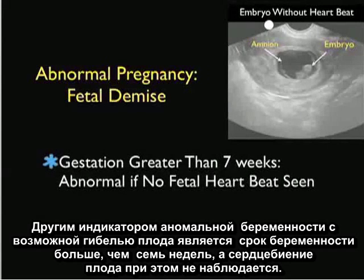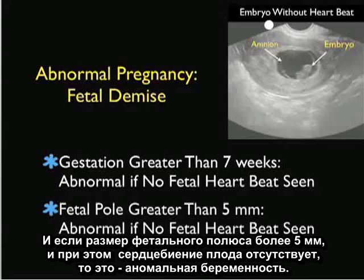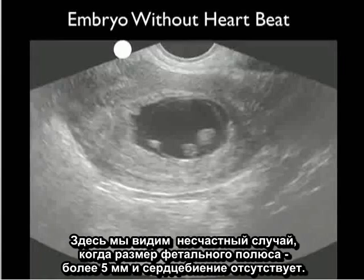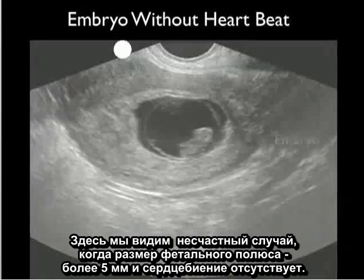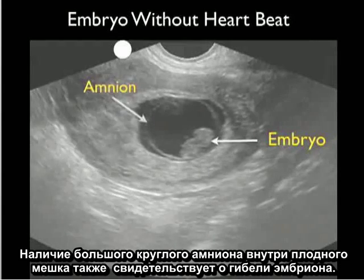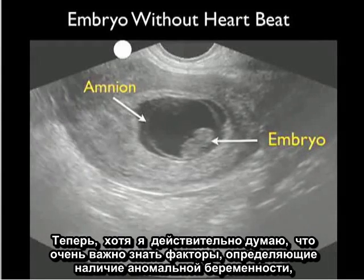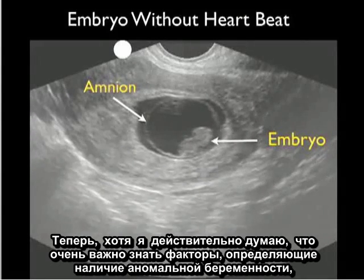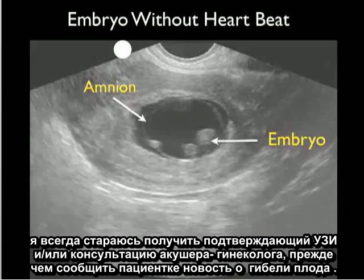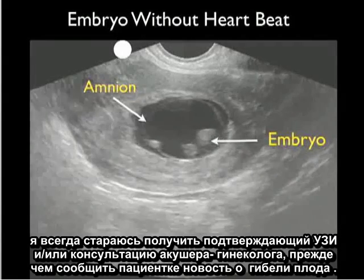Other indicators of an abnormal pregnancy with fetal demise include a gestation greater than 7 weeks with no fetal heartbeat, and a fetal pole greater than 5 millimeters without a heartbeat. This was an unfortunate case showing a large fetal pole greater than 5 millimeters without a heartbeat, indicative of embryonic demise, with a large circular amnion within the gestational sac. I always get a confirmatory ultrasound and/or OB-GYN consultation before giving the patient the news of fetal demise.